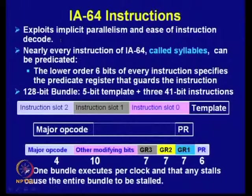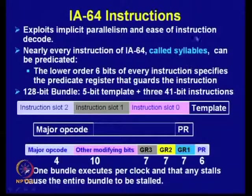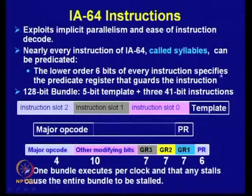The IA64 instruction format exploits explicit parallelism, implicit parallelism, and ease of instruction decode. The compiler exploits implicit parallelism available in a large number of instructions. Nearly every instruction in IA64 is called a syllable and can be predicated — the lower 6 bits of every instruction specify the predicate register that guards the instruction.